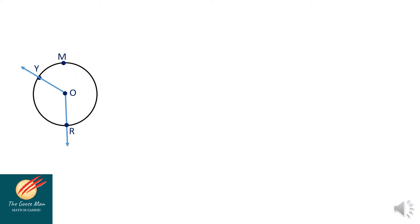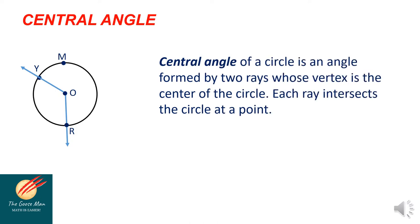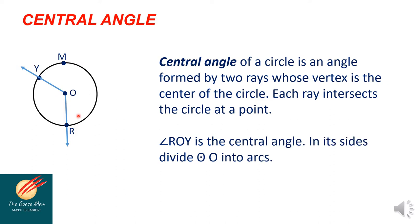In the previous lesson, we talked about some parts of the circle, so this time we'll talk more on parts of the circle. Let's start with Central Angle. A Central Angle of a circle is an angle formed by two rays whose vertex is at the center of the circle. Each ray intersects the circle at a point. If we consider circle O, we have ray OY and ray OR, and they intersect at point O. So we have Central Angle ROY — that's the Central Angle.